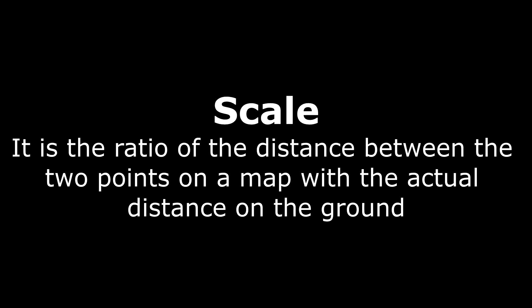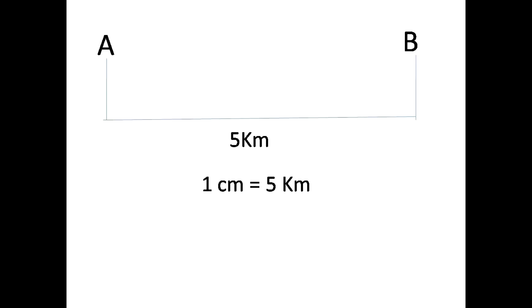Now the last map component is scale. It is the ratio of distance between two points on a map with the actual distance on the ground. For example, if the actual distance between two points is 5 km and on the map it is represented as 1 cm, then the scale will be written as 1 cm is equal to 5 km.